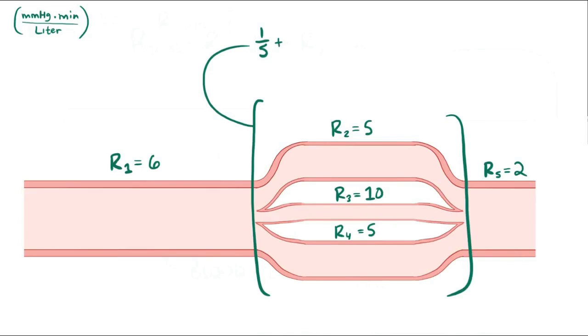So, you've got 1 over 5 plus 1 over 10 plus 1 over 5, which is 2 over 10 plus 1 over 10 plus 2 over 10, which is 5 over 10, which remember in the equation is equal to 1 over our total. So, if we flip 1 over our total and also 5 over 10, we get our total equals 10 over 5, which equals 2. So, this is the resistance of this chunk of parallel vessels. And this makes sense because with parallel resistance, the total is always less than the resistance of any one component.